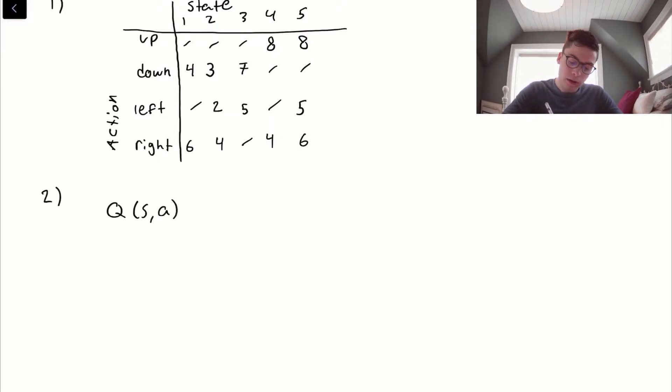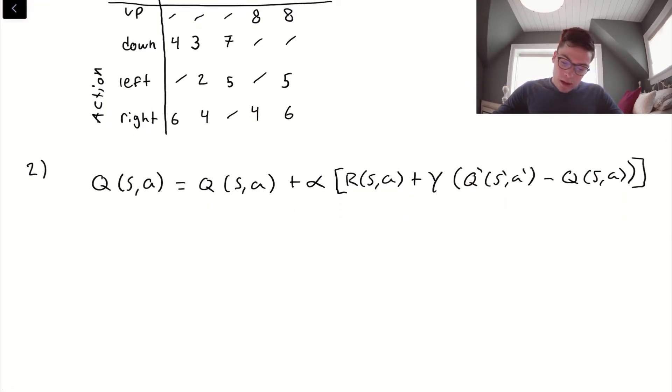How we're going to do this is we're going to use the Bellman equation. The Bellman equation is as follows. We have Q(S,A) equals Q(S,A) plus alpha times bracket R(S,A) plus gamma times Q prime (S prime, A prime) minus Q(S,A).